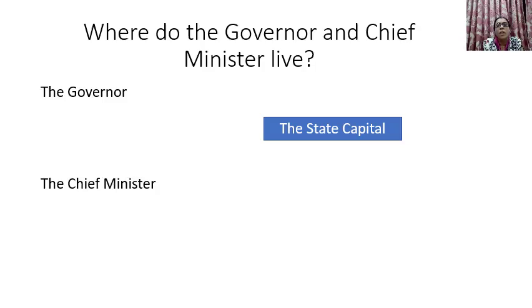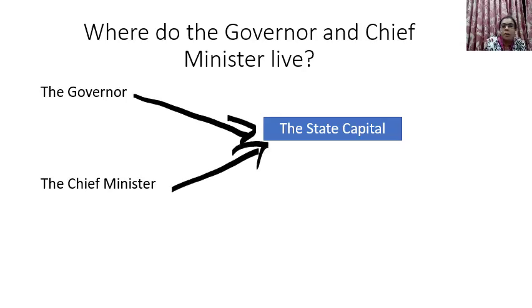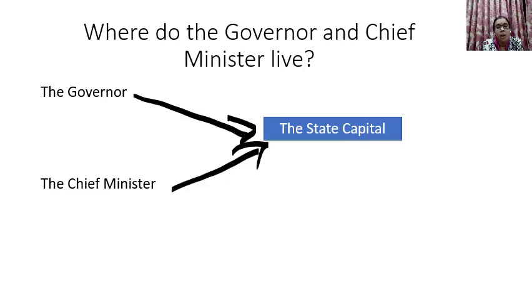Where do the governor and the chief minister live? They live in the state capital. For example, if we talk about Maharashtra, the governor and the chief minister of Maharashtra live in Mumbai, because Mumbai is the capital of Maharashtra.